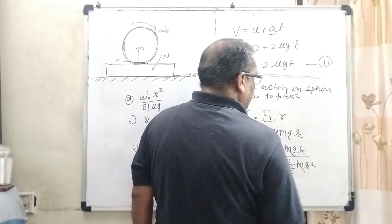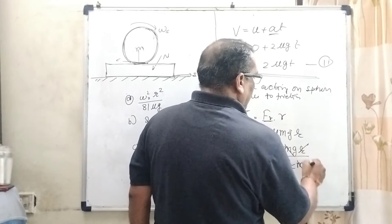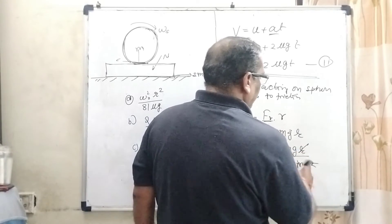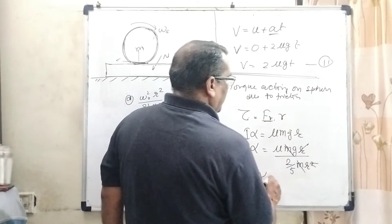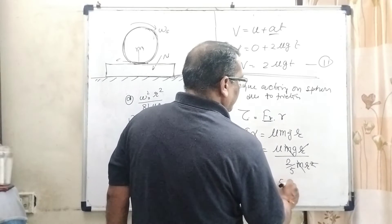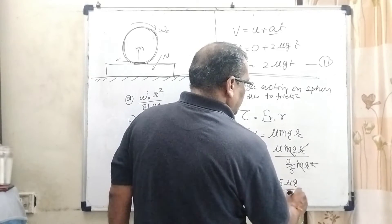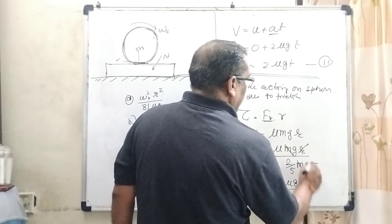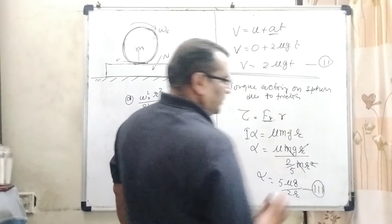Here m and m cancel out, and one r cancels out, leaving alpha equals 5 mu g upon 2r. This is our third equation.